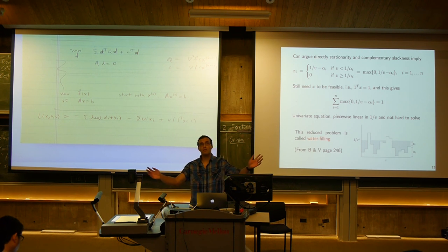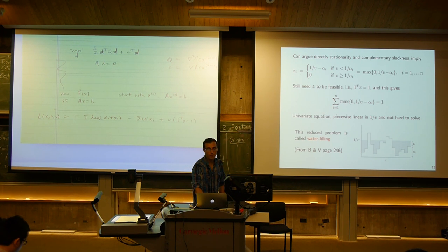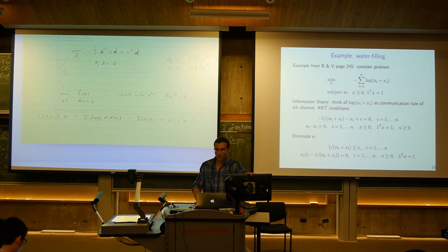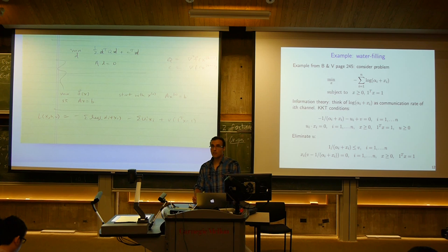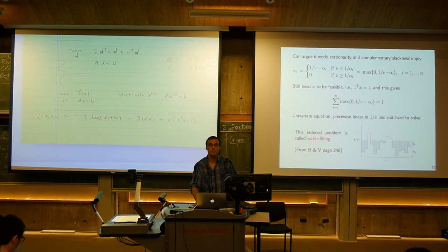Once you solve for 1/v, you get the primal solution directly from x_i = max(0, 1/v - α_i). There's a nice interpretation in terms of water filling — that's why it's called the water filling problem. This is an example where the KKT conditions reduce a complicated-looking problem to a very simple univariate equation. It doesn't happen all that often with interesting problems, but it certainly can.